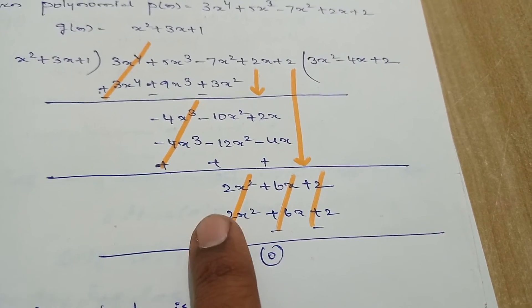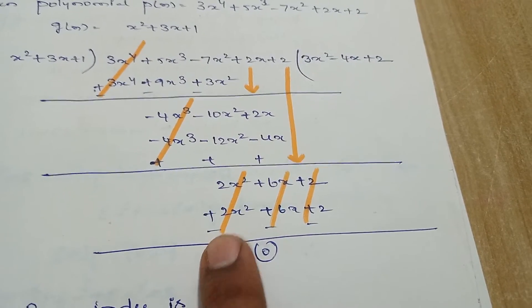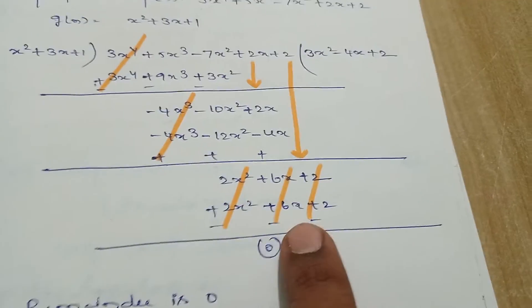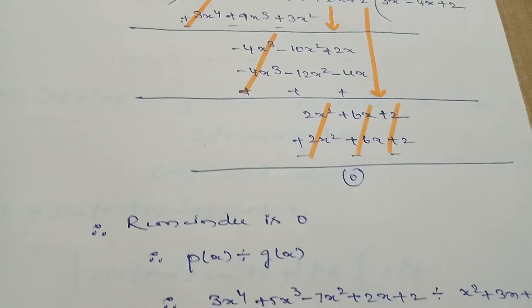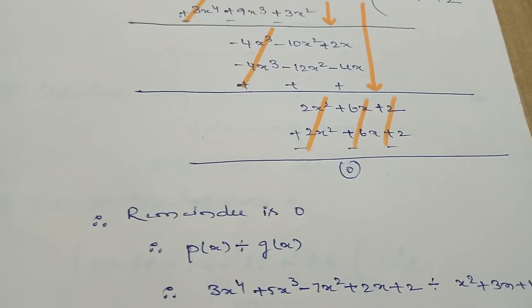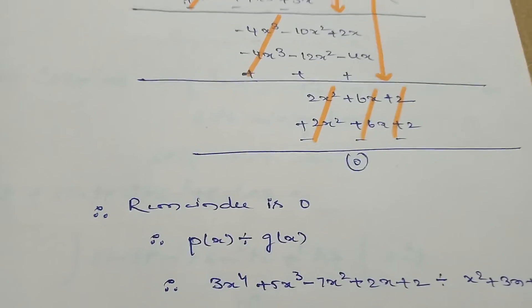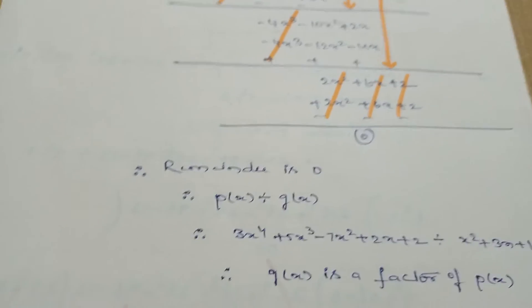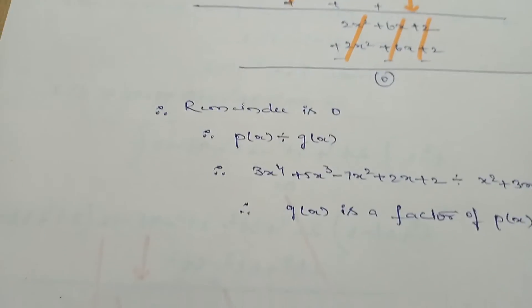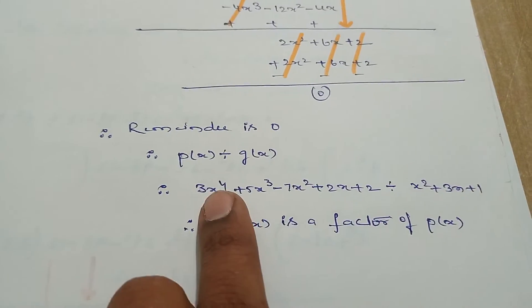Here all the signs are the same, and while doing subtraction the signs will be different, therefore all terms get cancelled. So the remainder is zero. Remainder is zero means the first polynomial is a factor of the second polynomial, or the second polynomial is a factor of the first polynomial.